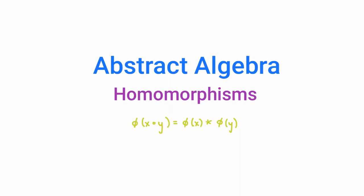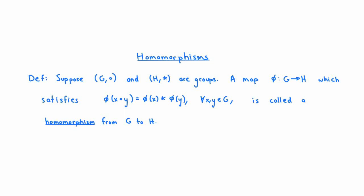One item of good news is that if you understand homomorphisms of groups, then later on when we talk about homomorphisms of other algebraic structures, such as rings and fields, it'll be pretty easy to understand those as well. Here is the definition of a homomorphism of groups. Let's suppose we have two groups G and H, and for clarity, let's write the binary operation on G with a circle and the binary operation on H with a star. A map phi from G to H is called a homomorphism if, for every pair of elements X and Y in G, phi of X circle Y equals phi of X star phi of Y.